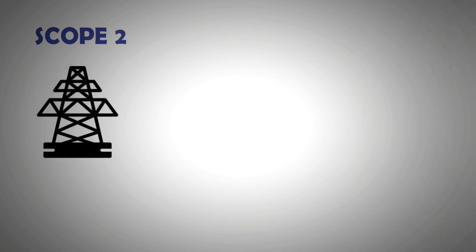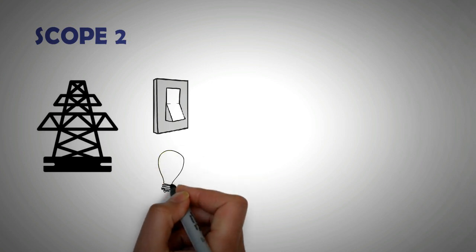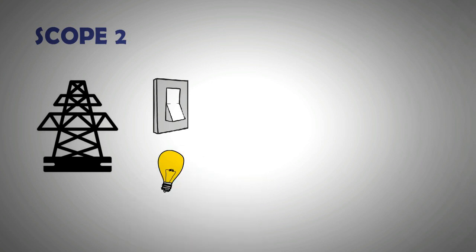Scope 2 is the indirect energy emission because of energy usage, mainly electricity usage. An organization may use electricity which doesn't generate emissions on site. However, the creation of electricity and its distribution results in emissions that are off-site, that is, in a power plant. It should be noted that electricity emissions vary greatly because of the fuel used to produce electricity.